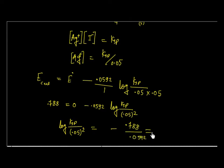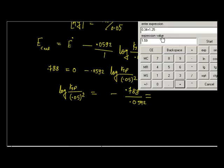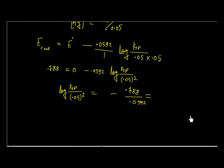So now I can calculate log(Ksp / 0.05²). This is simply minus 0.788 divided by 0.0592. Let us calculate this value: 0.788 divided by 0.0592. This value is 13.31. So log(Ksp / 0.05²) equals minus 13.31.